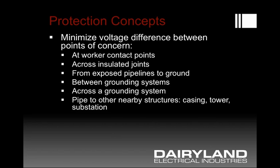There are a number of protection issues that come up in this topic. Basically, the concern is minimizing voltage between two points. It could be two points that a worker could get across, it could be the voltage difference across an insulated joint from one side to the other, between a pipeline and ground, or even between grounding systems or across a single grounding system where a voltage gradient could exist in the earth.